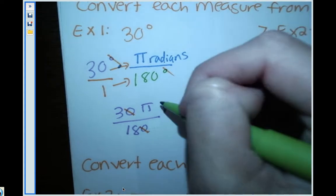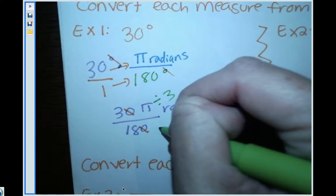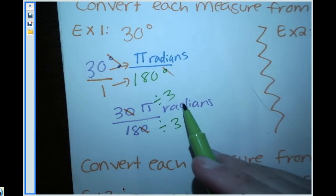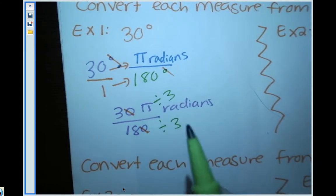3 divided by 3 is 1, but I still have a π in my numerator, so I need to make sure I have a π left over.